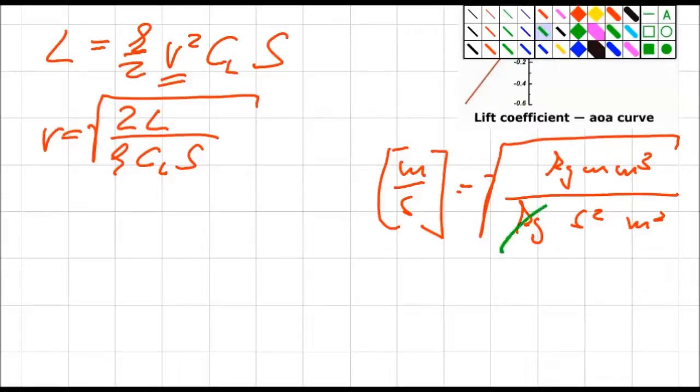Now kilogram and kilogram cancels out. Meter to the power of 4 versus meter to the power of 2 gives me meters to the power of 2. Meter square over second square square root meters per second. I am on the safe side. Now if I do the numbers I find out that speed is 90 meters per second which equals 325 kilometers per hour.